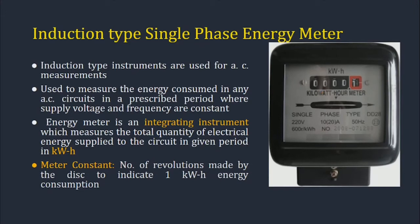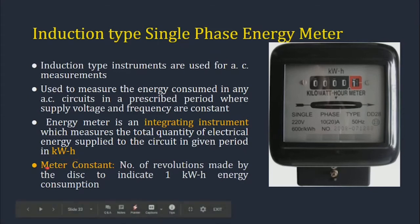Measurement of energy: induction type instruments are used for AC measurements and to measure the energy consumed in AC circuits over a prescribed period where supply voltage and frequency are constant. It is an integrating instrument that measures the total quantity of electrical energy supplied to the circuit in a given period, in kilowatt-hours. The meter constant is the number of revolutions made by the disc to indicate one kilowatt-hour energy consumption.